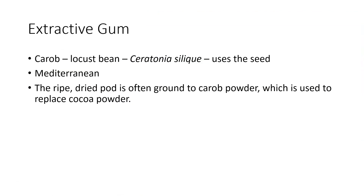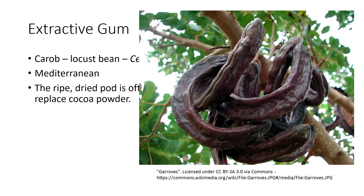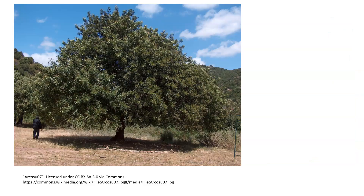There are also extractive-type gums, where the gum is extracted from the plant through processing. This brings us back to carob, which is used to replace cocoa powder. In this case, the locust bean seed is used to extract the gum — the carob gum is actually removed from the seed as a byproduct of the carob industry. Carob gum can be used for many different purposes. The pods and tree have a quite unique appearance.